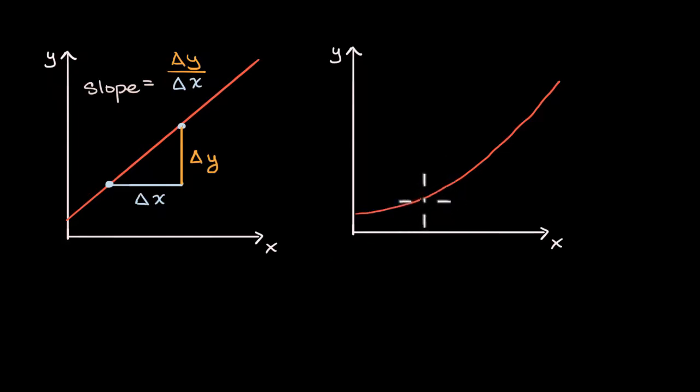What is the instantaneous rate of change at a point? So for example, how fast is y changing with respect to x exactly at that point, exactly when x is equal to that value? Let's call it x1.